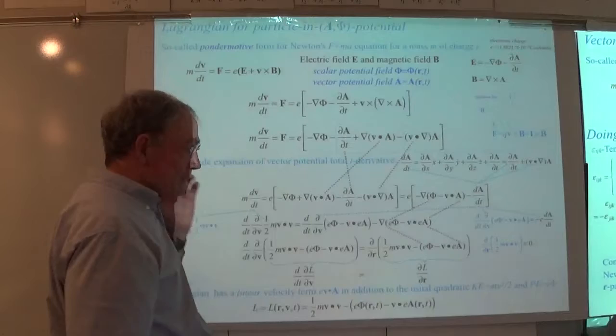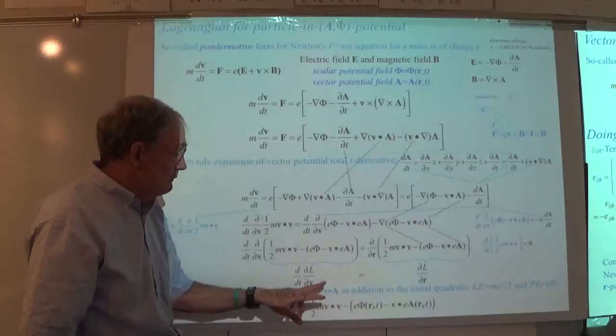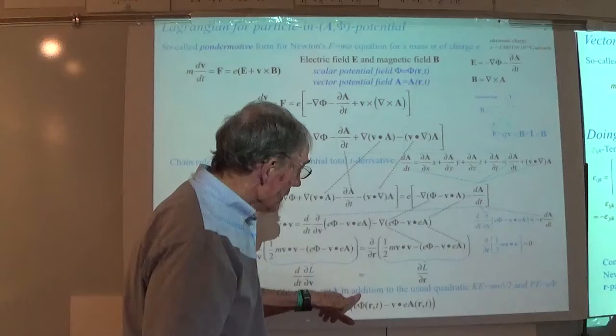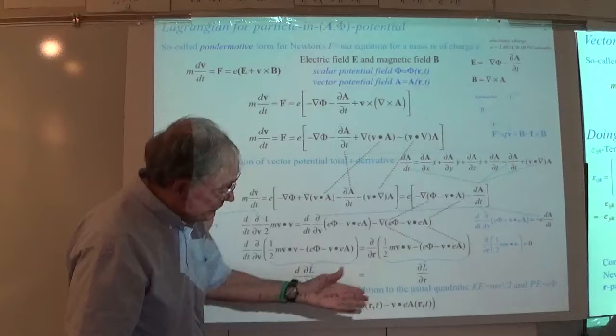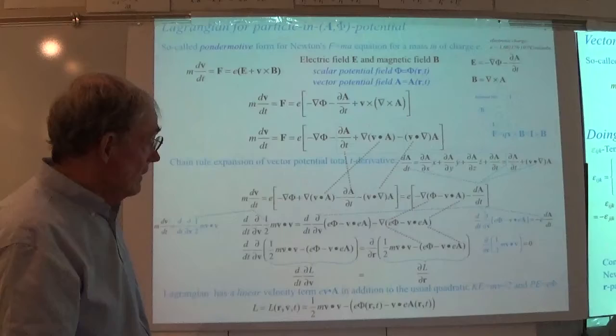This linear velocity term — in addition to the usual quadratic — is a key thing here. The Lagrangian being a function of velocity and position depending on these fields is the key thing we have. So I'm going to catch up with this screen and we end up with the Lagrangian at the bottom.